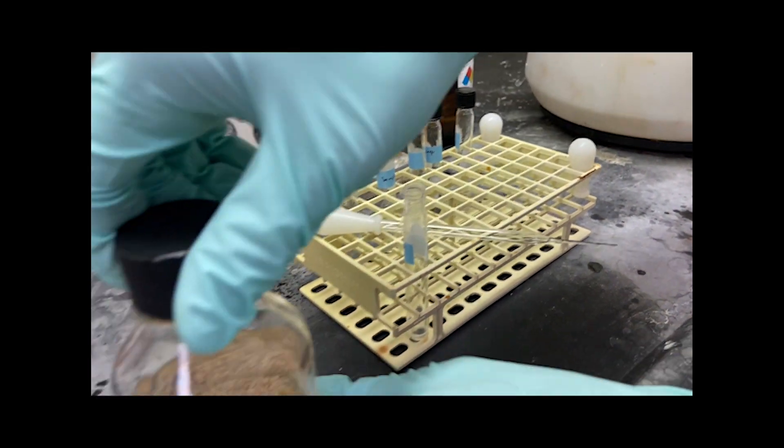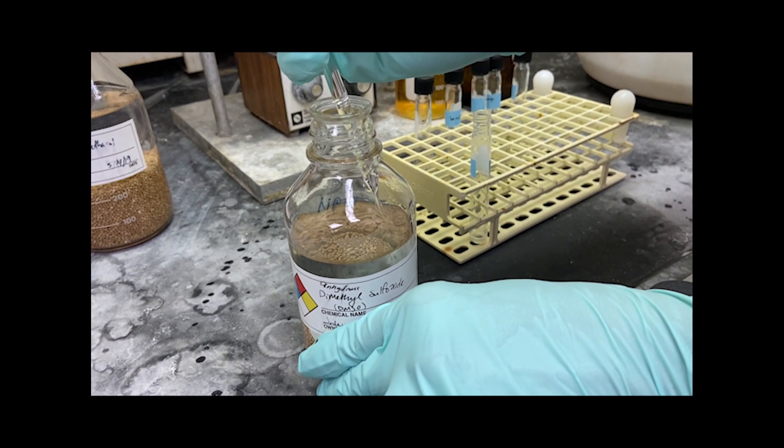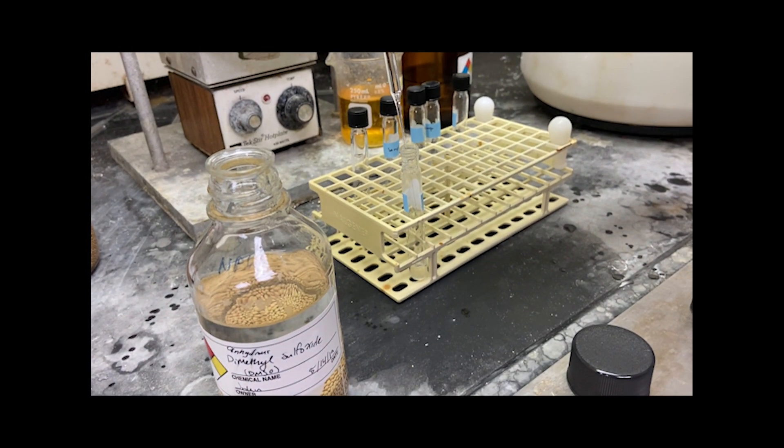After the final wash, we add 2 milliliters of DMSO to the base solution and vortex the solution, and the base is now ready to be added to the sample.